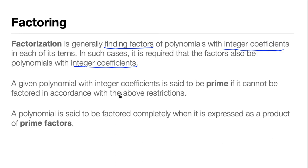A given polynomial with integer coefficients is said to be prime if it cannot be factored in accordance with the above restrictions. So here, a polynomial is said to be factored completely when it is expressed as a product of its prime factors. Meaning, it cannot be factorized anymore. So when it cannot be factorized anymore, it's called a prime factor. And we're going to tackle more of that in the next succeeding videos.